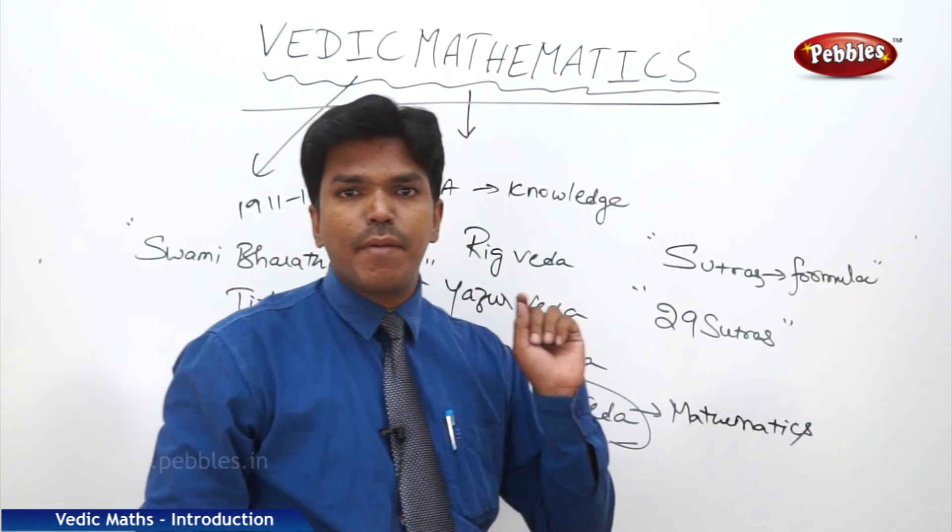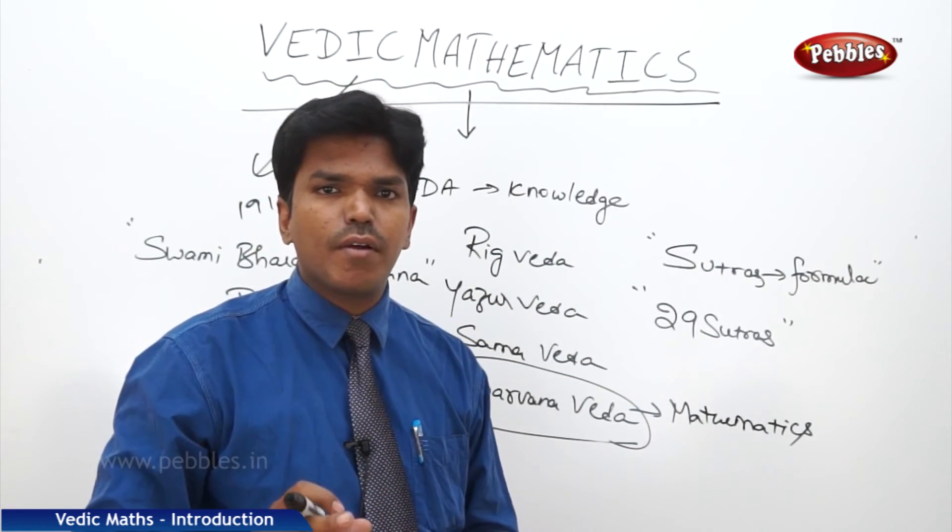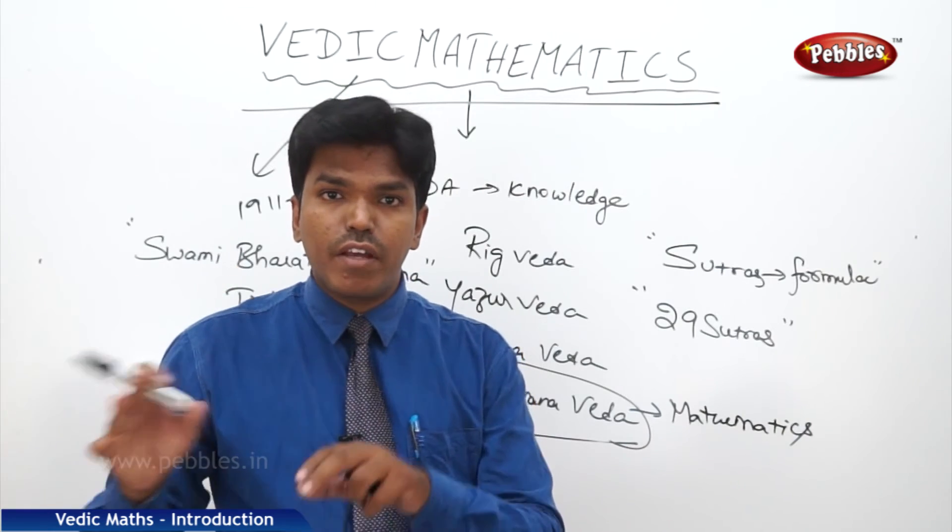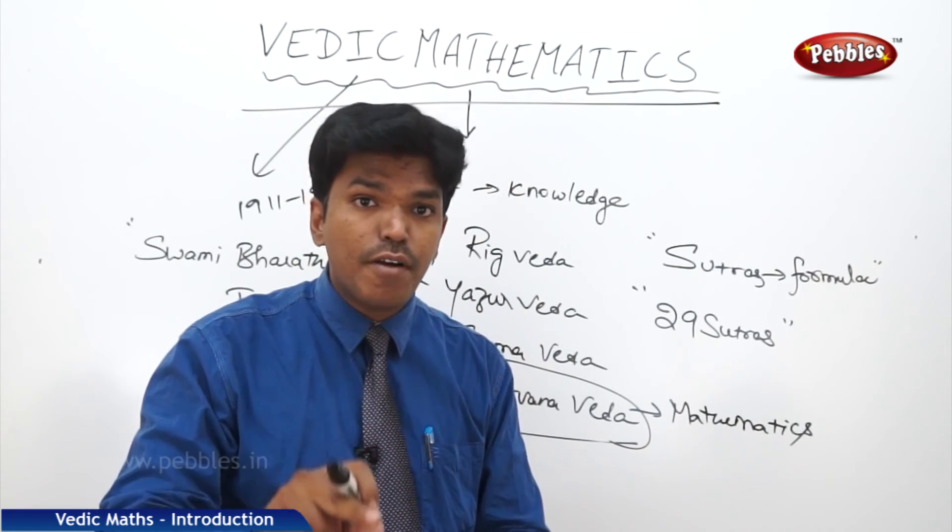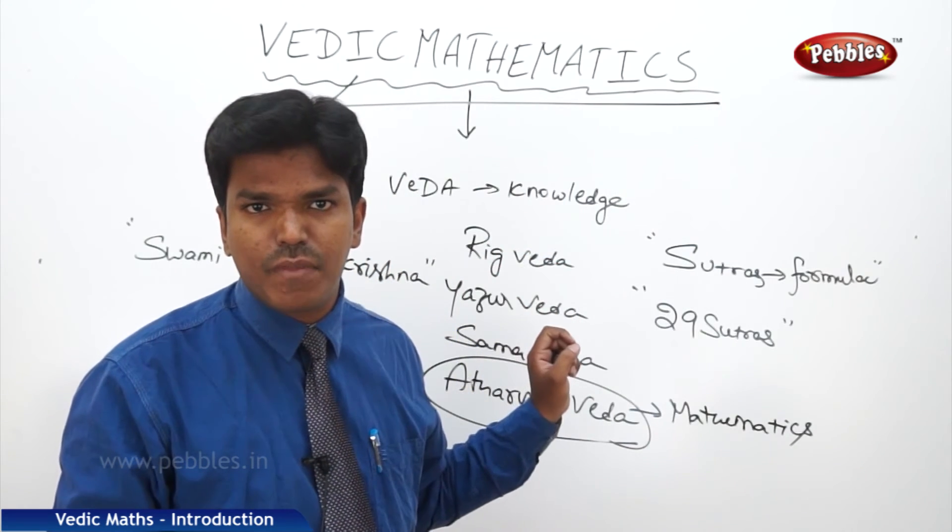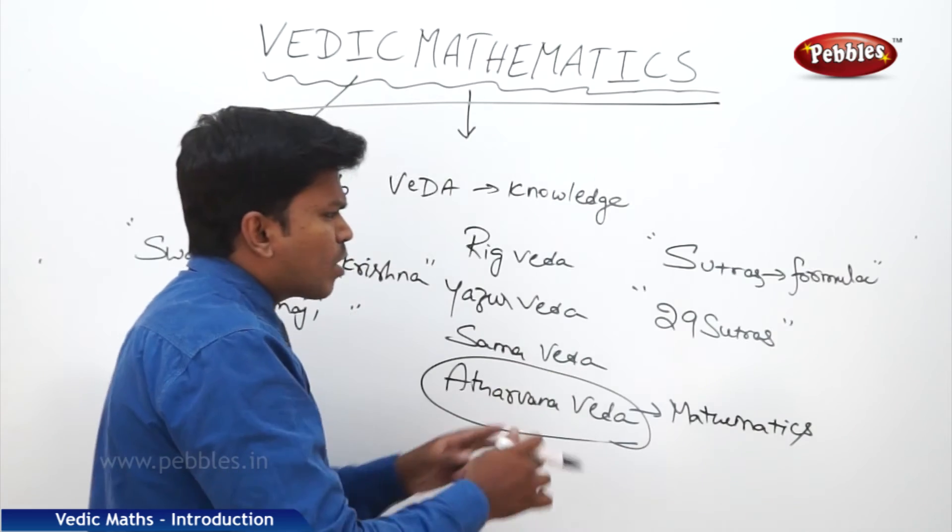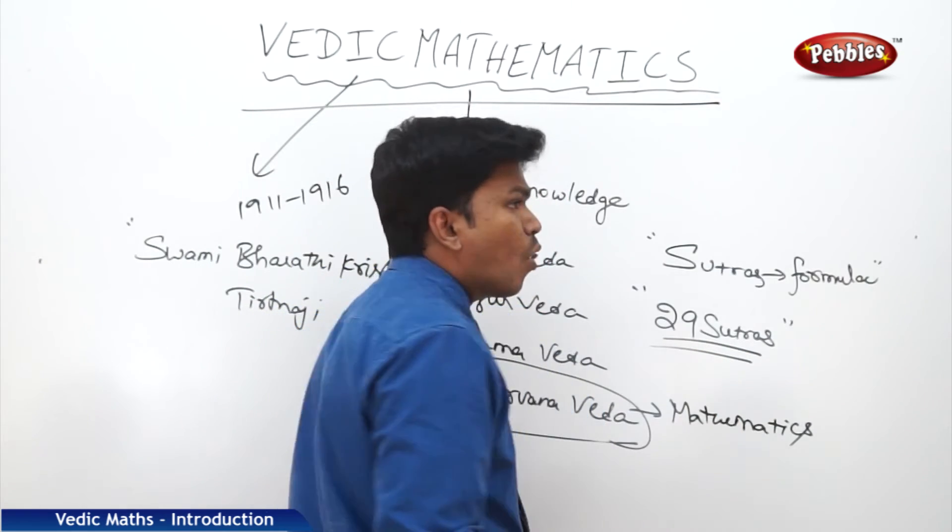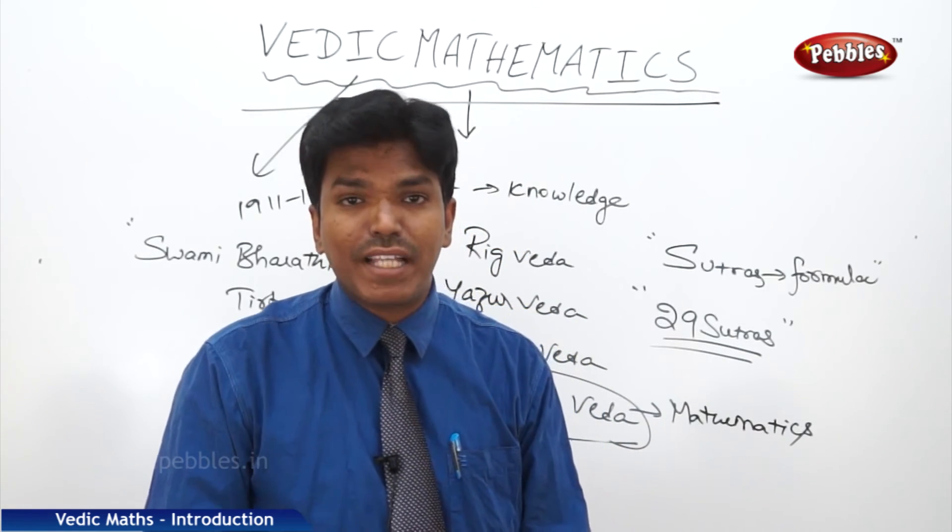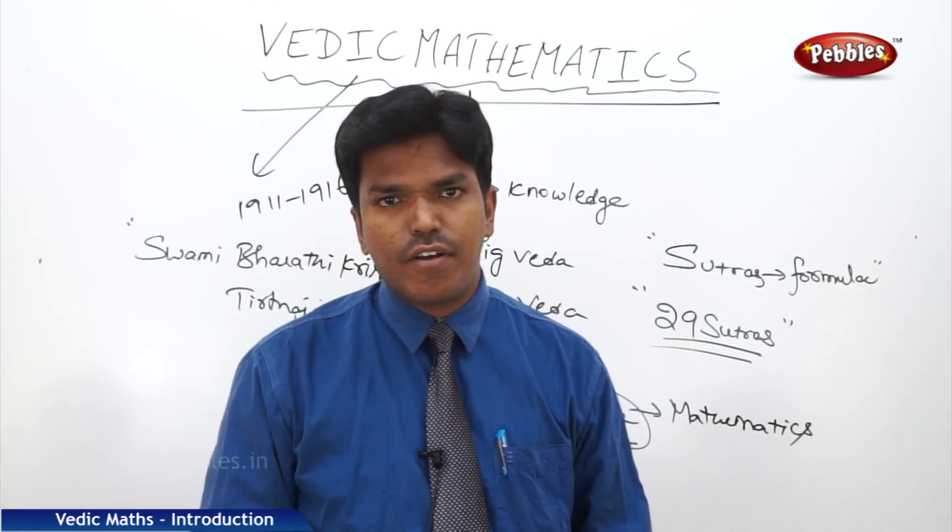Since then, the term came into existence, even though the mathematics is there before thousands of years ago in our India. But the term Vedic Mathematics came into existence because of this great personality. Now, so what are these 29 sutras and how they help to make maths easy, to make the calculations easy?